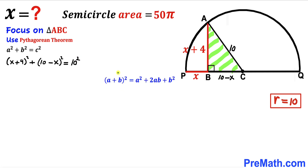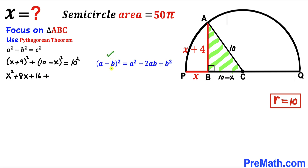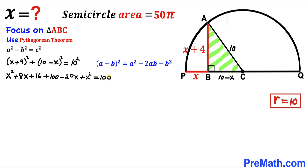Recalling the identity (a + b)² = a² + 2ab + b², expanding (x + 4)² gives x² + 8x + 16. Using the identity (a − b)² = a² − 2ab + b², expanding (10 − x)² gives 100 − 20x + x². So the left side becomes x² + 8x + 16 + 100 − 20x + x², and the right side is 100.